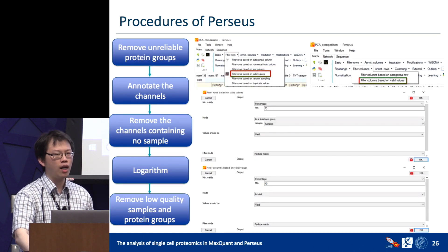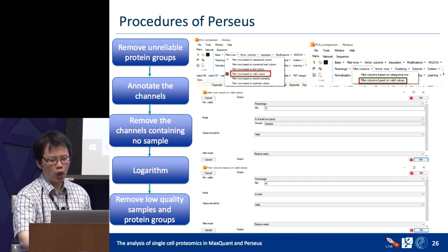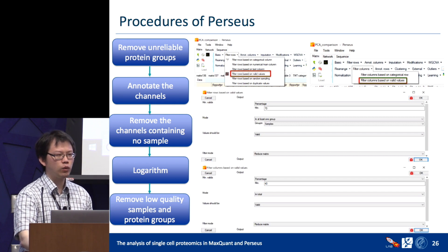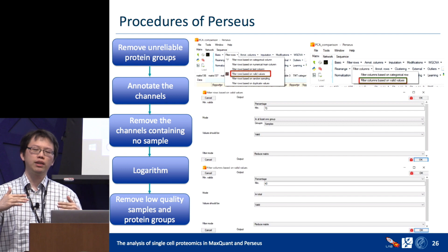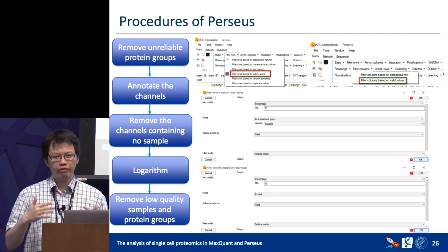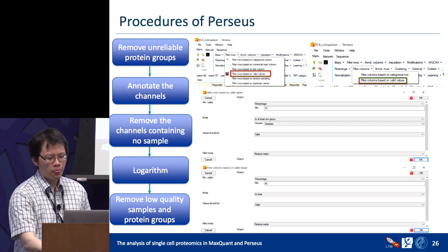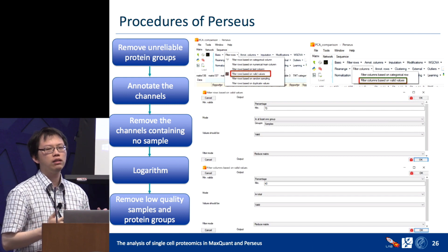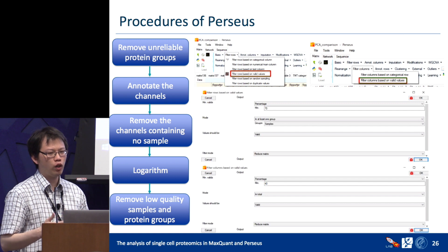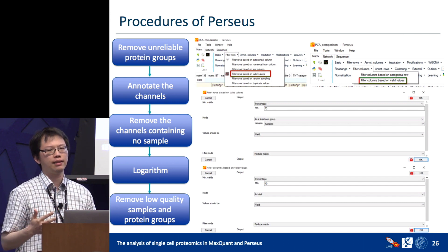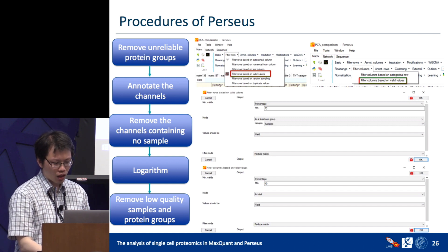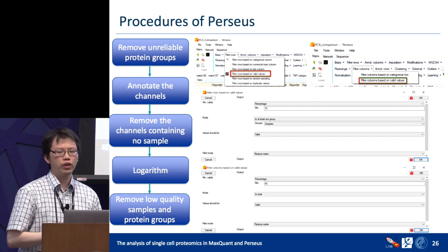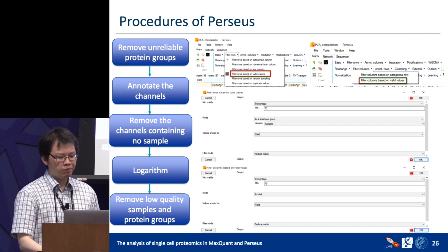After log transformation, we can remove low-quality samples or protein groups using Filter Rows and Filter Columns. Filter rows by valid values using a percentage cutoff — we use 70%, meaning protein groups with more than 70% valid values are kept. You can set the condition to require at least one group or all groups to pass this cutoff. For columns, we use a 40% cutoff. This gives us a high-quality table.